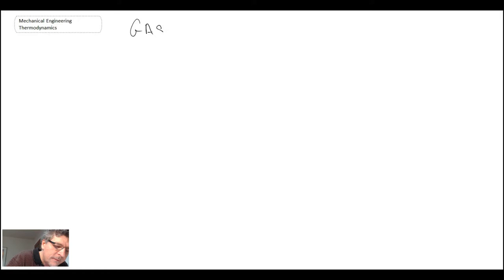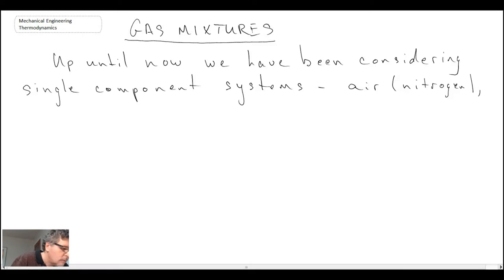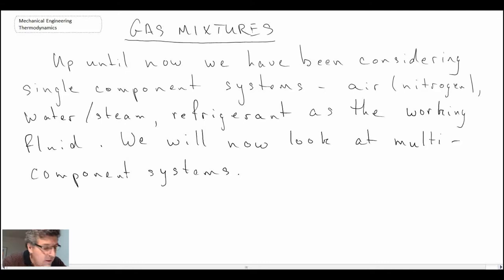We're now going to take a look at gases that do not exist as a single component, but rather gases that are in what we call gas mixtures. We'll be looking at gas mixtures whereby you could have two different gases mixed together — for example, a natural gas that consists of ethane and methane in different percentages. We need to develop the procedures by which we can evaluate the properties of these gas mixtures.